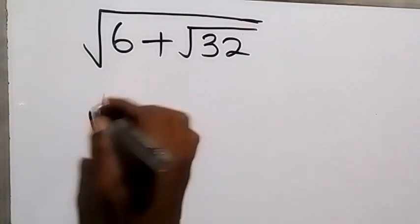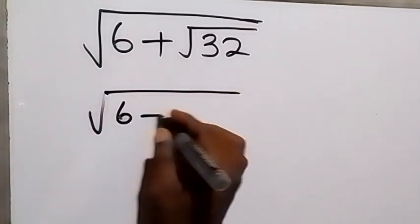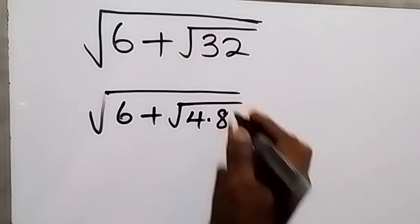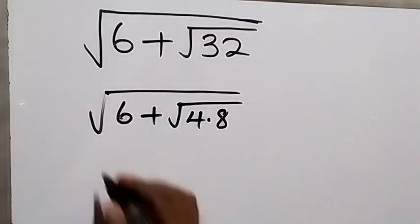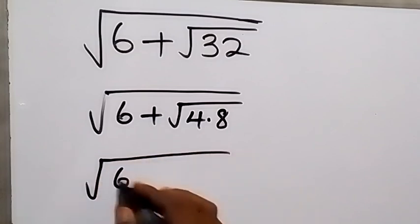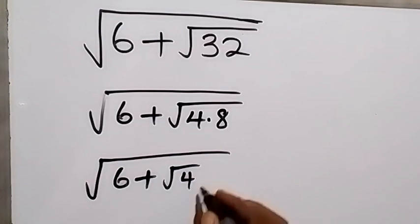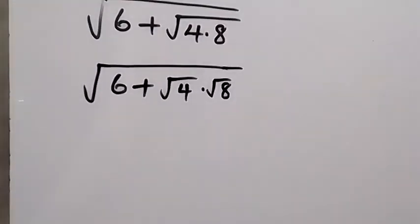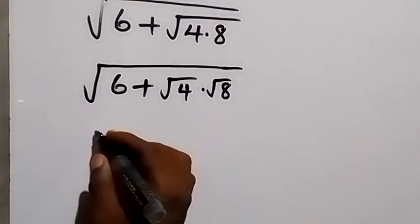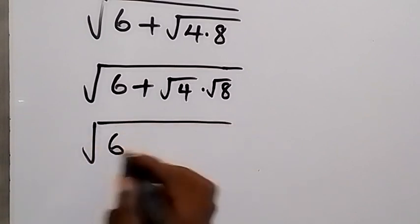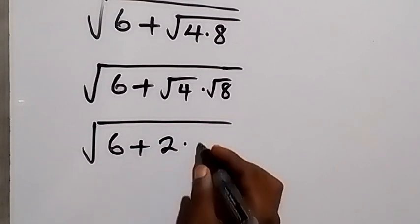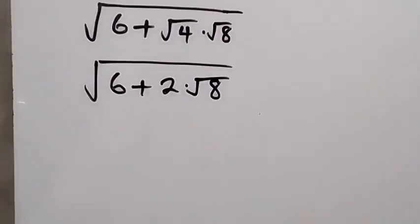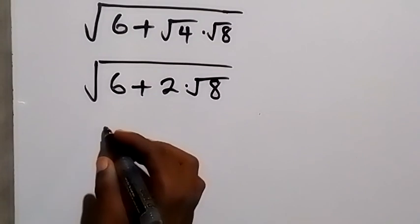From here we can write square root of 6 plus root 32. We can express 32 as 4 times 8, so this becomes square root of 6 plus root 4 times root 8. Since root 4 is 2, we can rewrite this as square root of 6 plus 2 times root 8.